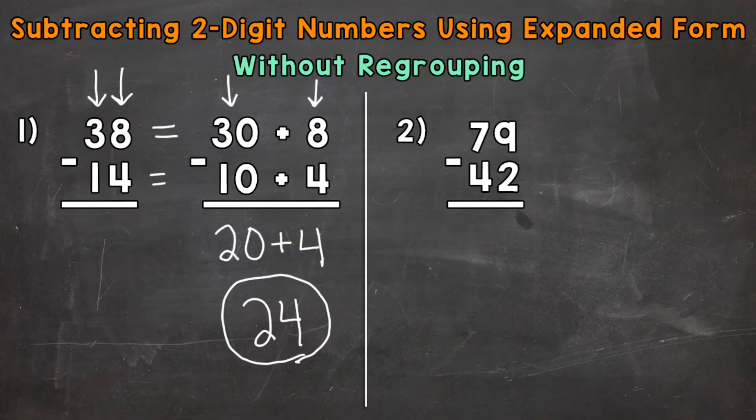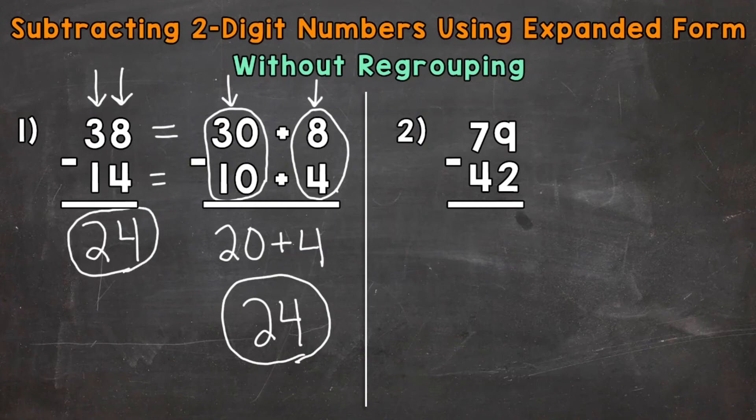Let's move back over to the left, where we have the original problem, and solve it over there as well, and see if we still get 24. Start with the ones. So we have 8 ones minus 4 ones. That was represented right here in our Expanded Form. It gives us a 4 in the ones. Then we move to the tens, where we have 3 tens minus 1 ten. The value of those digits were represented right there. 3 minus 1 gives us a 2 in the tens place for a final answer of 24.